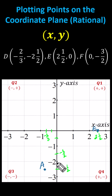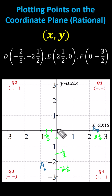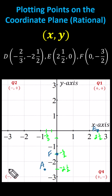Negative four halves is equal to negative two, and we can see that negative three halves is equivalent to negative one and a half. To plot point F from the origin — because x is zero, we do not move left or right, and because y is negative three halves, we move down one and a half units to negative three halves. Notice point F is on the y-axis. I hope you found this helpful.